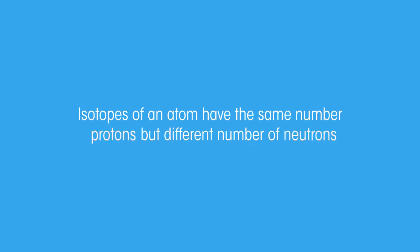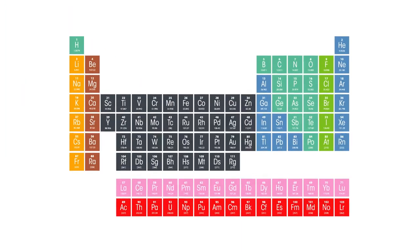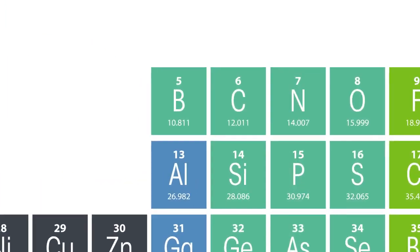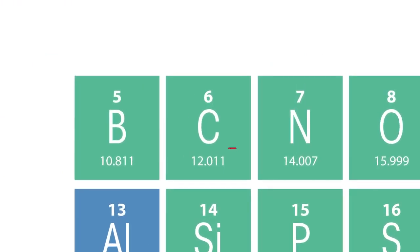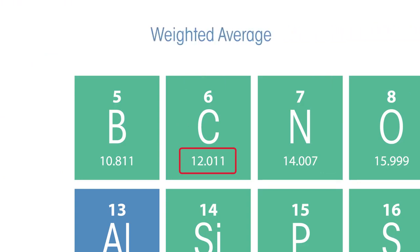The different isotopes do, however, have identical chemical properties. Have you ever wondered why some of the mass numbers in the periodic table aren't whole numbers? This is because the mass shown in the periodic table is a weighted average of all the atoms of that element — so of all the different isotopes.